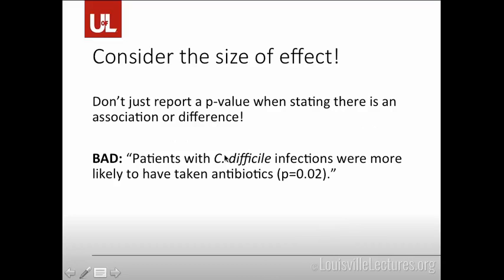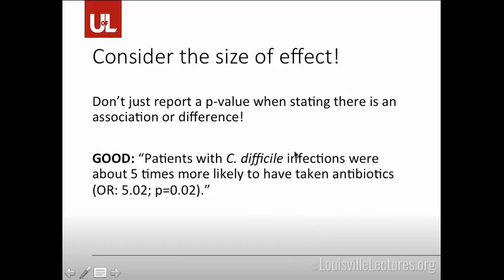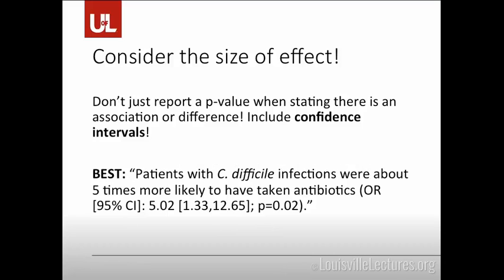If you are reporting your results, one thing you should look at is not only reporting the p-value. A bad example would be: "patients with C. diff infections are more likely to have taken antibiotics, p = 0.02" — you should not do this. A better example would be to say patients with C. diff infections were about five times more likely to have taken antibiotics, giving your odds ratio. But the best way would be to include a confidence interval, which shows the magnitude of the effect. Here, instead of just saying five times more likely, we also have a confidence interval from 1.33 to 12.65 — a pretty wide confidence interval showing a large degree of variability.